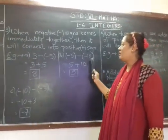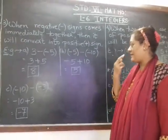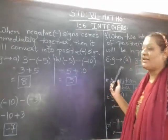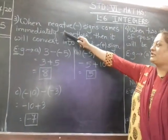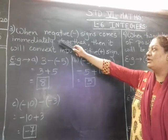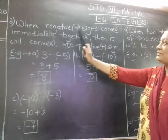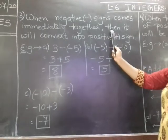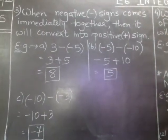Okay children, moving on to the third rule for positive and negative integers to be subtracted and added together. Belonging to the third rule: when negative signs come immediately together, they will convert into a positive sign.